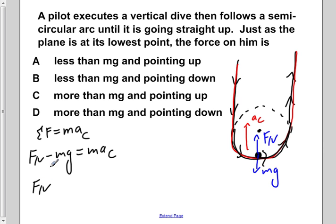Now, if we solve for Fn by adding mg to both sides, we get Fn is equal to mg plus ma centripetal.